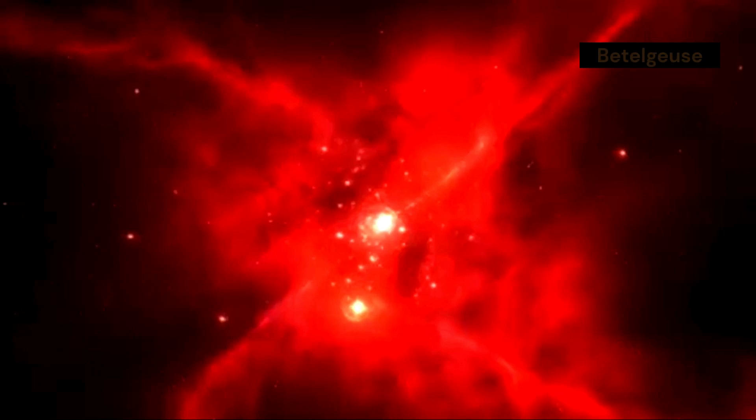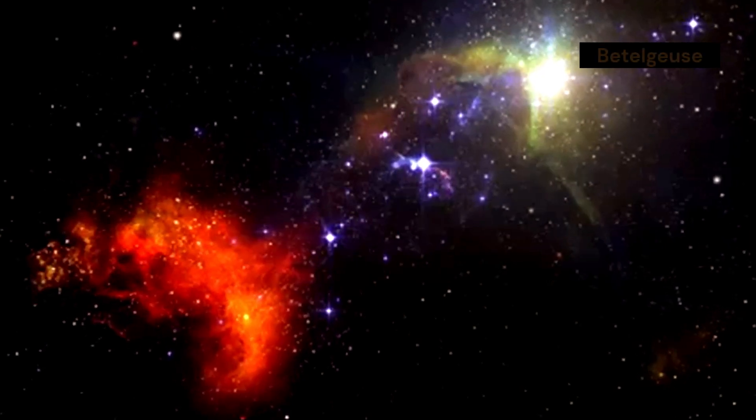Betelgeuse is like a cosmic pressure cooker. It has burned through much of its fuel, the hydrogen that powers stars like our sun. As the fuel runs low, the star's core contracts and heats up, causing the outer layers to expand outward like a balloon being inflated. This expansion is what makes Betelgeuse a supergiant.